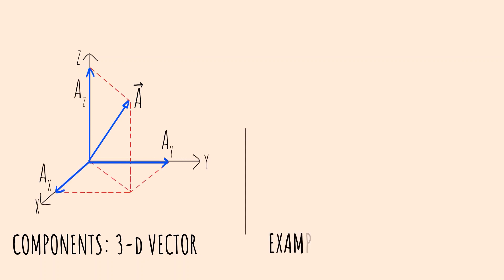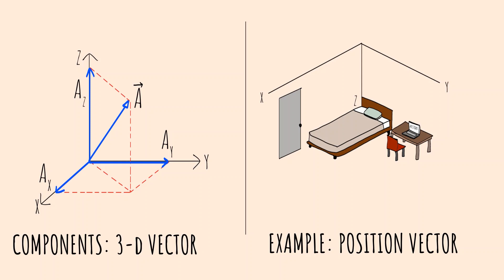Since our real world is 3-dimensional, the components of a 3D vector are beneficial in many situations. Let us suppose you are watching this video on your laptop in your room. Then considering any corner of the room as origin, one can describe the laptop's position in terms of x, y, and z components of the position vector.